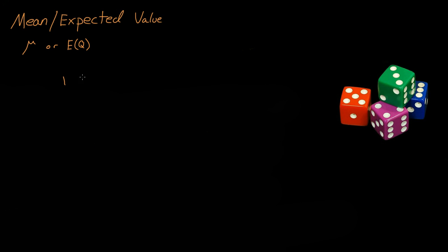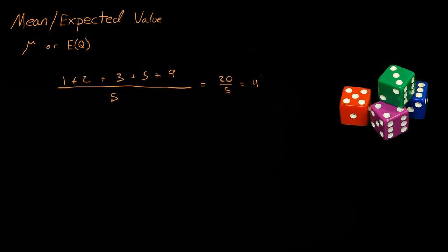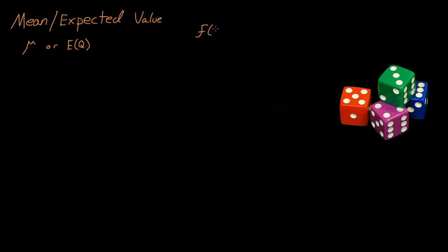Let's say we have the numbers 1, 2, 3, 5, and 9. What's the average of these? Well, you add them all up and divide by the total number of numbers. There are five numbers, so that is 20 divided by 5 — the average of this set is 4. That's what average is: add up all the numbers and divide by the total amount.